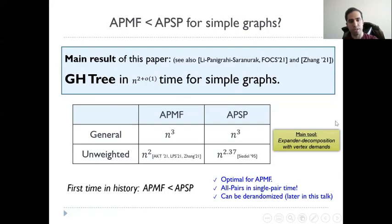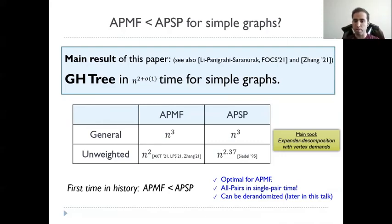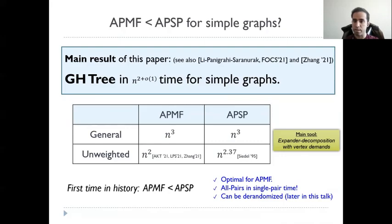The main result of this paper is that Gomory-Hu tree can be solved in n-squared time for simple graphs. This is very exciting because it's the first time in history that all-pairs maximum flow can be solved faster than all-pairs shortest path. This is also optimal, since just the size of the output is n-squared, so we do not expect anything faster. Furthermore, this algorithm can be derandomized, which I'll talk about later in this talk.